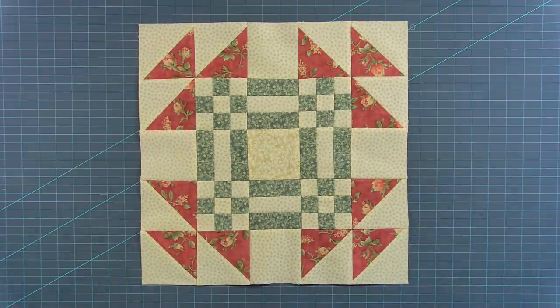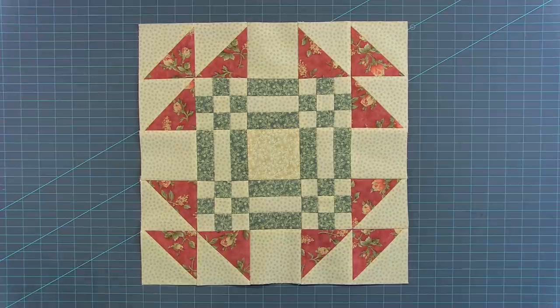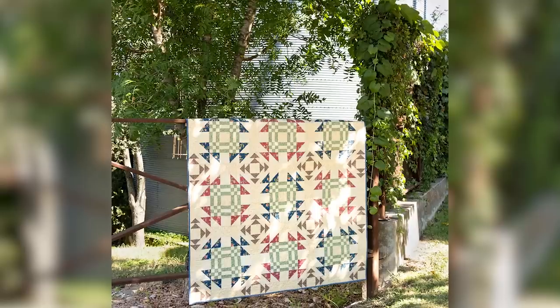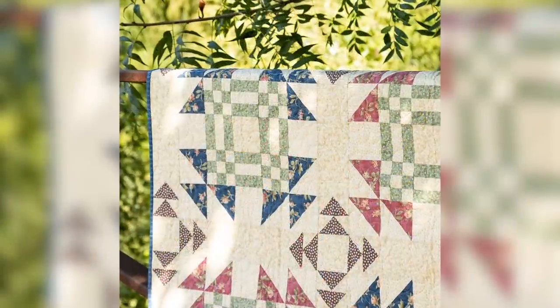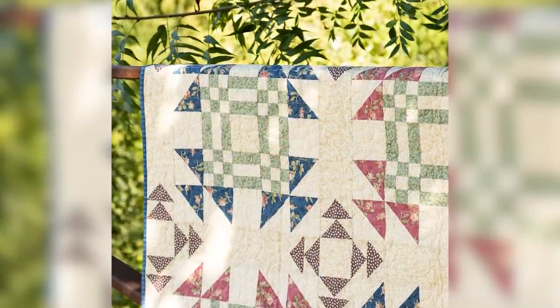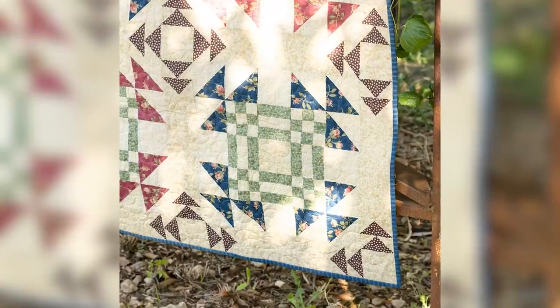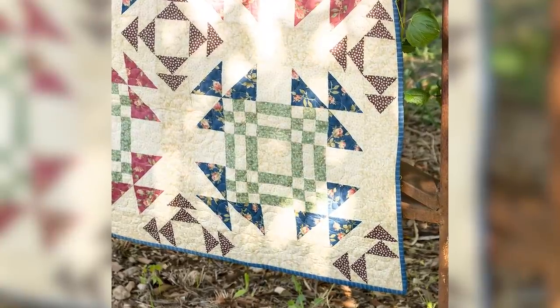This is called the Geese in the Pond block. And ours finishes at 15 inches. And the free block pattern is at fatquartershop.com. In addition to the free pattern, we have a low price PDF. And on that, it's going to give you instructions on how to assemble the quilt in either a crib, a square lap, a rectangle lap, or a queen. And the beauty of this setting is that these flying geese create a secondary design to have more geese in the pond.